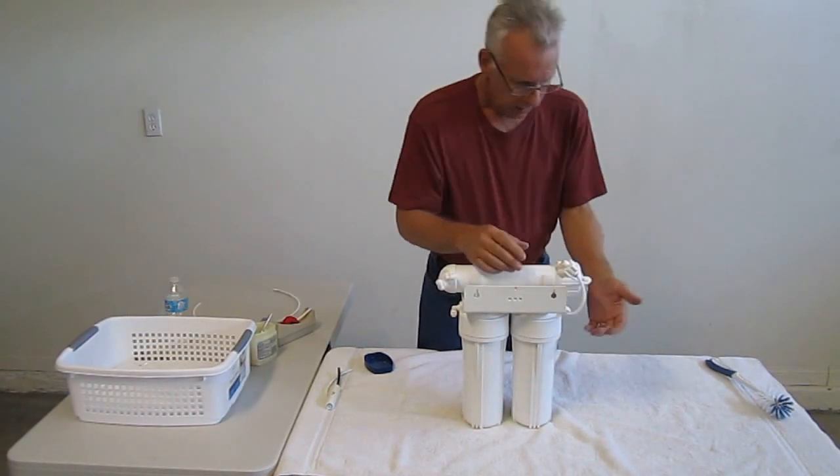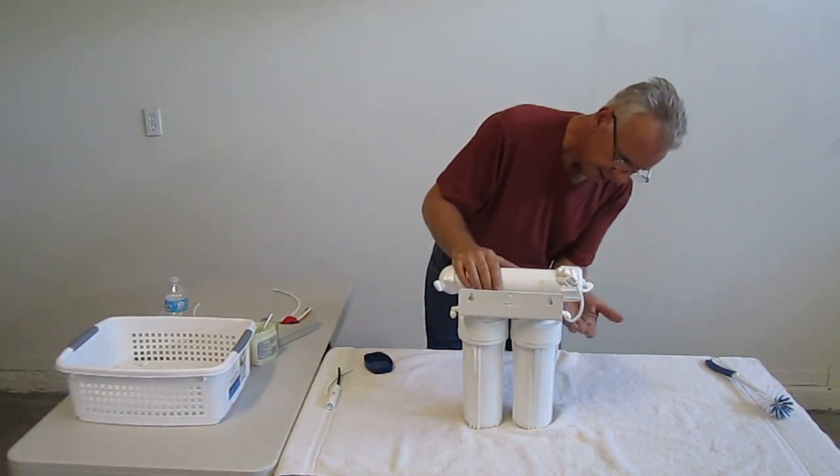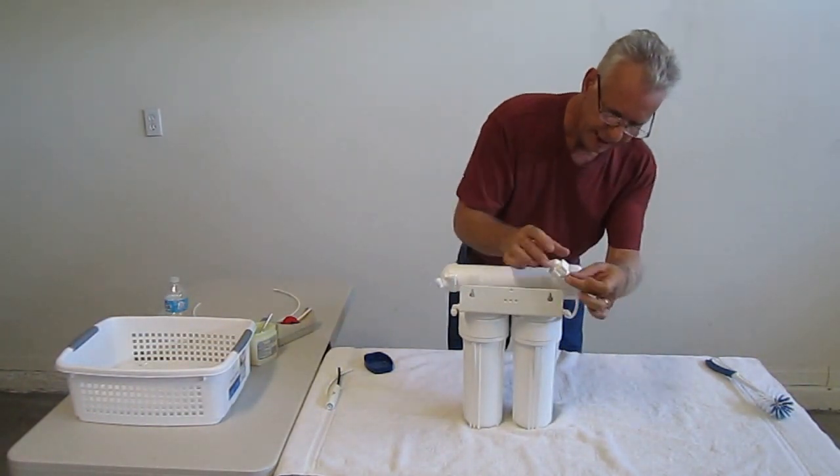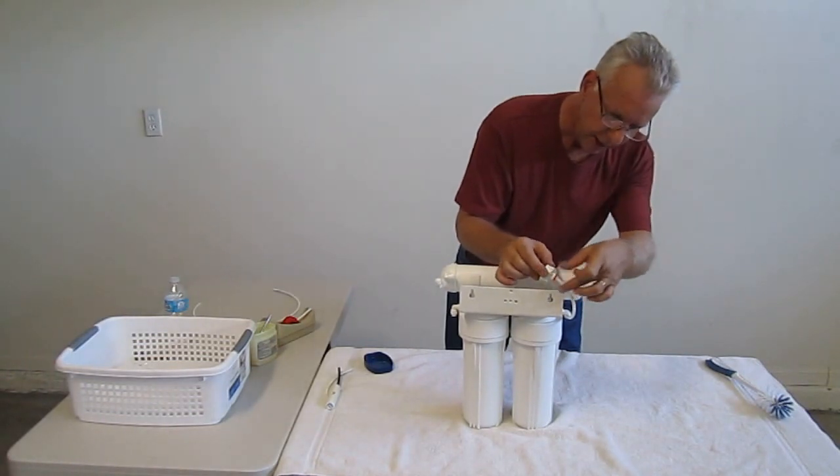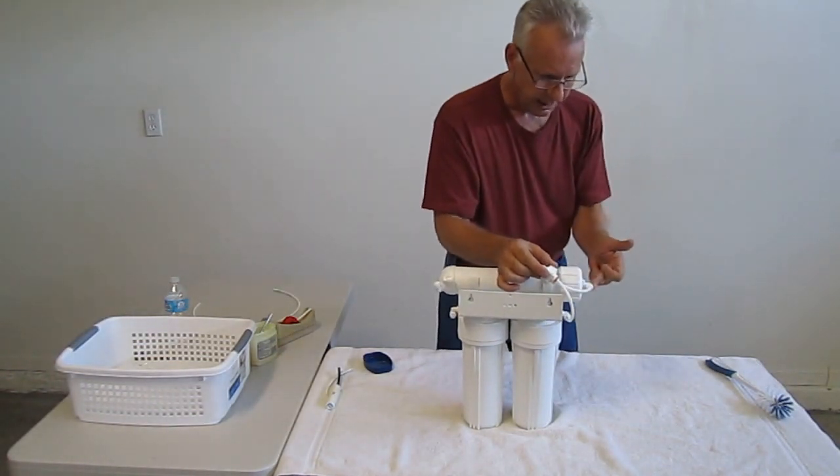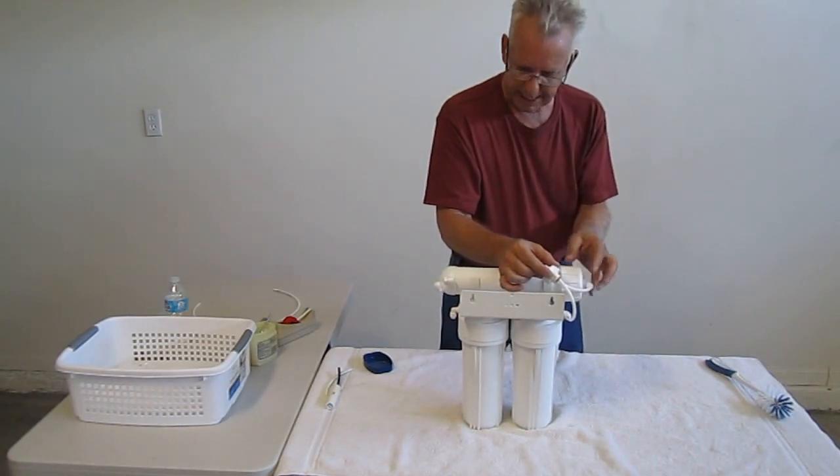Okay, now this is installed. So you've got your high side coming out of your carbon filter going to the inside of the valve, high pressure side, then to the outside of the valve into the inside of the reverse osmosis membrane housing.